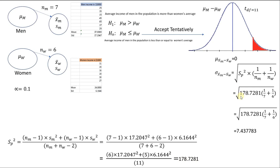Now we can plug the pooled variance of 178,281 into the formula. We have the pooled variance, and then one divided by the size of the first sample plus one divided by the size of the other sample. That gives us the standard deviation of the distribution of the difference between the two sample means.